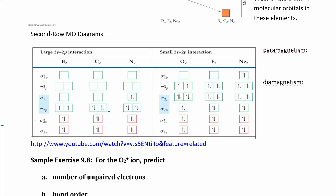That's the difference between paramagnetic and diamagnetic. Diamagnetic means no unpaired electrons. Paramagnetic means one or more unpaired electrons. So oxygen is paramagnetic and B2 is paramagnetic. You can click to watch a video showing a magnet demonstrating paramagnetism.